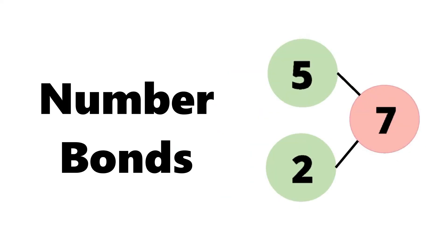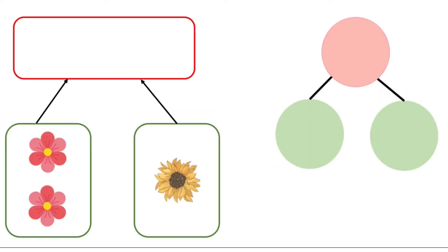Again, we will use number bonds to help us. There are two groups of flowers here. These are parts.